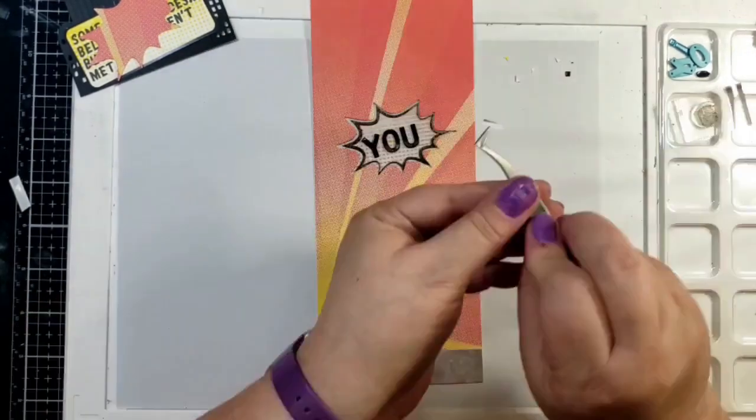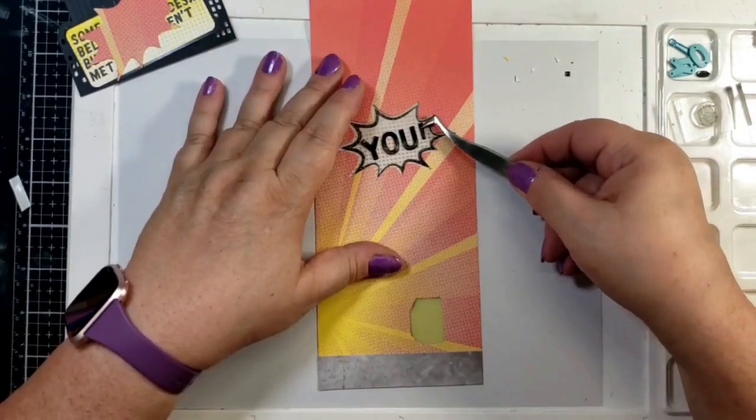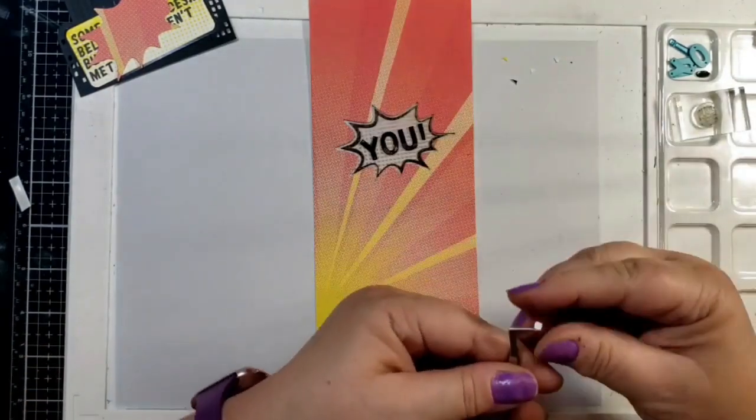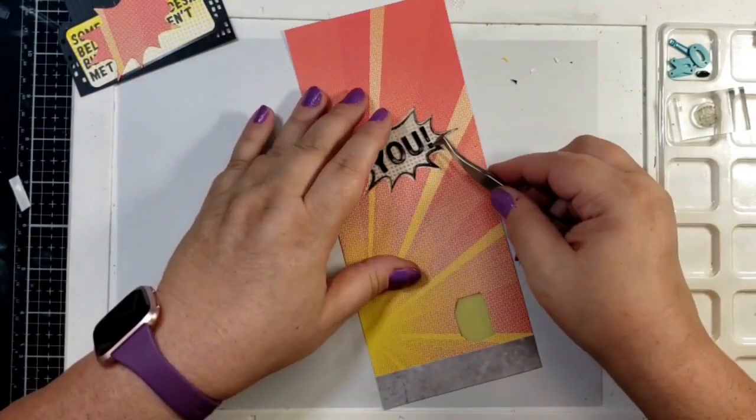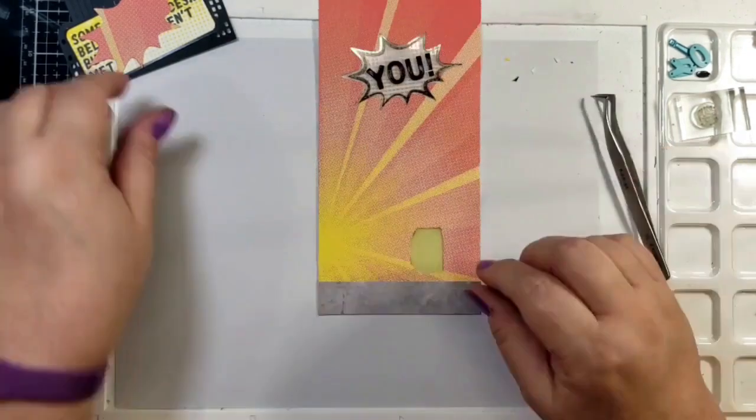So, all these are little pieces. So I'm using my tweezers, which are very helpful, especially this little tiny part of the exclamation point. So there you go. Those are all in place.